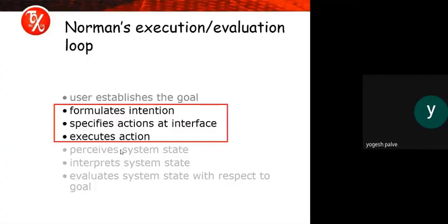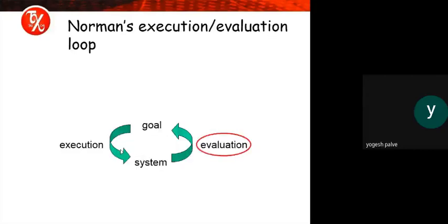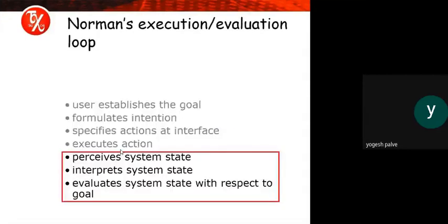In the execution phase, we specify the action at the interface and then execute the action. In the evaluation phase, we first perceive the system state, then interpret the system state, and finally evaluate the system state with respect to our goal. These are the steps that come under the evaluation loop.